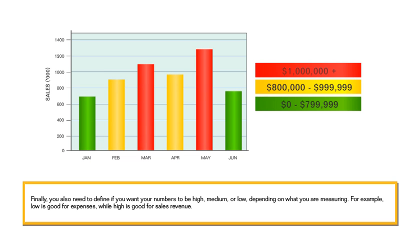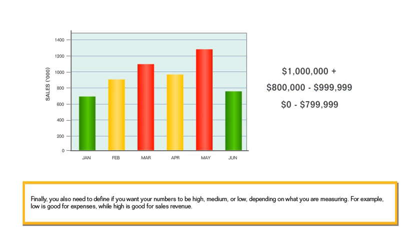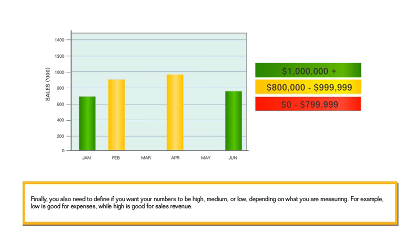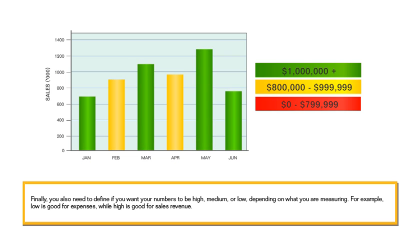Finally, you also need to define if you want your numbers to be high, medium, or low, depending on what you are measuring. For example, low is good for expenses, while high is good for sales revenue.